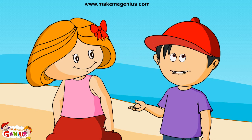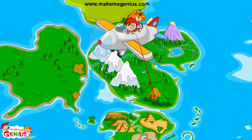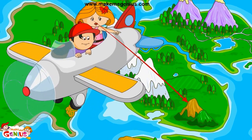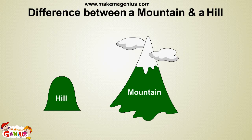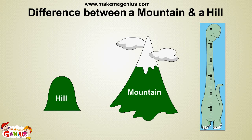Let's go back to our flying machine. I want to learn more. I can see a small mountain. That is not a small mountain. That is a hill. If the land is not too high, it is called a hill. A mountain is very high. Scientists measure the height of the land and based on height, they decide whether it is a mountain or a hill. Now I understand the difference between a mountain and a hill.